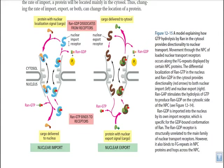We have another protein, the RAN protein, which is a GTPase. We have a RAN GTP bound state and also a RAN GDP state. In this procedure, we also have proteins which help to shuffle these RAN proteins — the GEF, which is the guanosine exchange factor, and also the GAP present in the cytosol, which is called the GTPase activating protein.